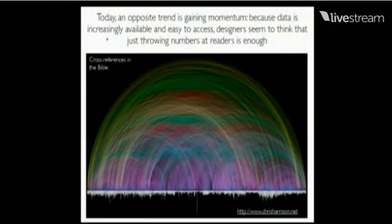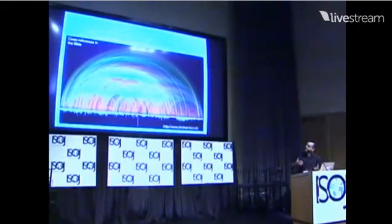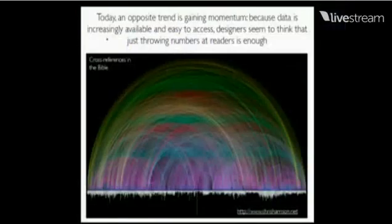Today we have the opposite trend gaining momentum — because data is increasingly available and we have the tools to handle and process it, we end up having things like this, which is basically data art. It's not data journalism, it's art. It shows the cross-references in the Bible, and don't get me wrong, I think it's extremely beautiful, but it doesn't really help you understand anything. It allows you to explore the data only if you know what the data is about beforehand.